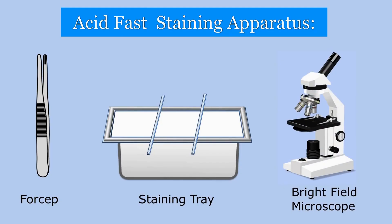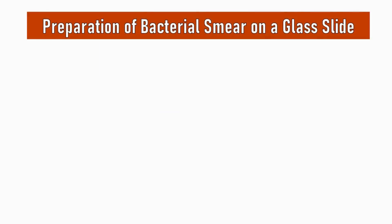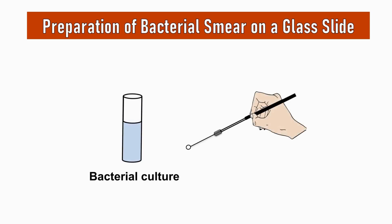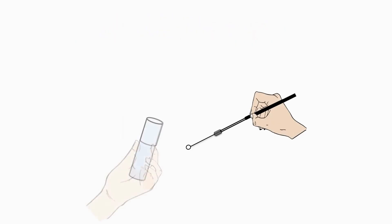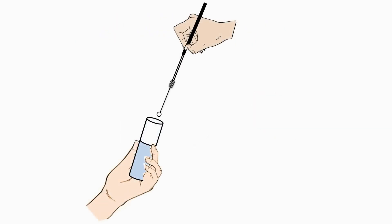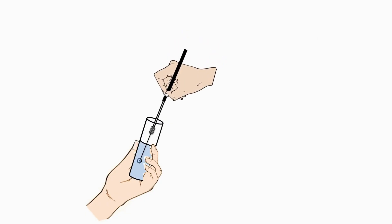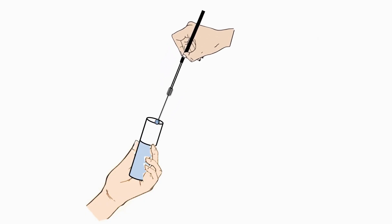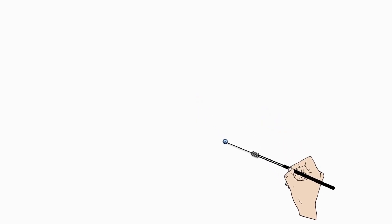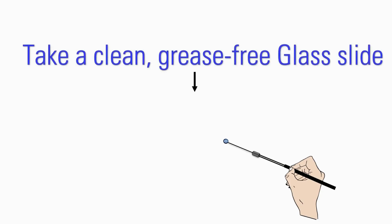Now we have all the apparatus required for acid-fast staining. Let us begin the practical. The first step is to make a bacterial smear on the glass slide. Take the test tube having bacterial suspension, dip the sterile wire loop into the test tube, and take out a loop full of bacterial culture.